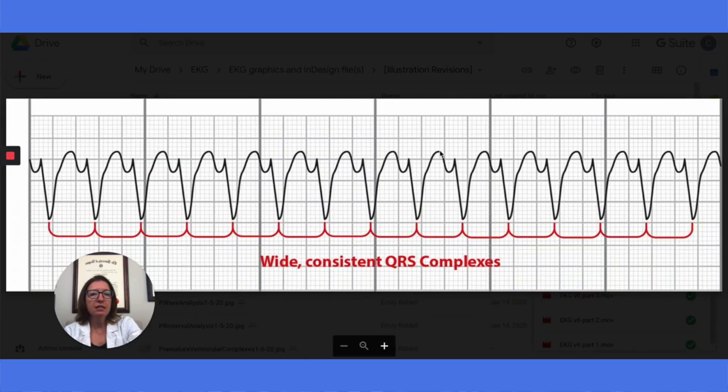In terms of heart rate, if I measure the distance between these QRS complexes, there's about 10 small boxes between them. So 1,500 divided by 10 is 150 beats per minute. We're definitely experiencing tachycardia here.